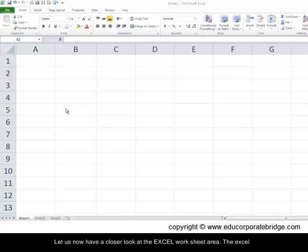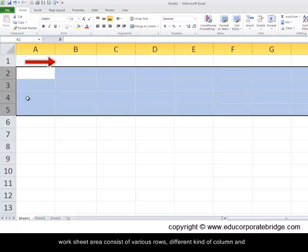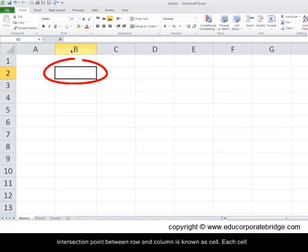Let us now have a closer look at the Excel worksheet area. The Excel worksheet area consists of various rows, different kinds of columns, and the intersection point between the row and the column is known as a cell.